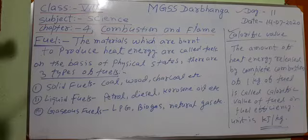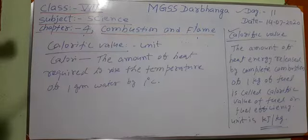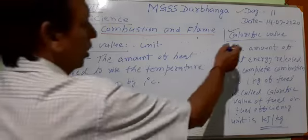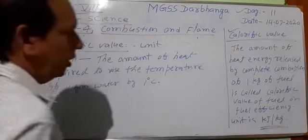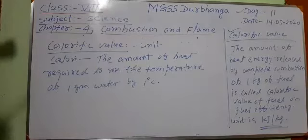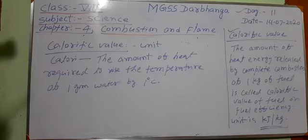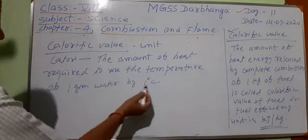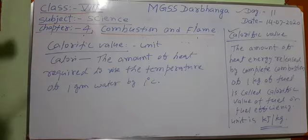The calorific value consists of two units: one is the unit of heat and other is the unit of mass, such as kilojoule per kg. What is calorie? Calorie is the amount of heat required to raise the temperature of 1 gram of water by 1 degree Celsius. That is called 1 calorie.